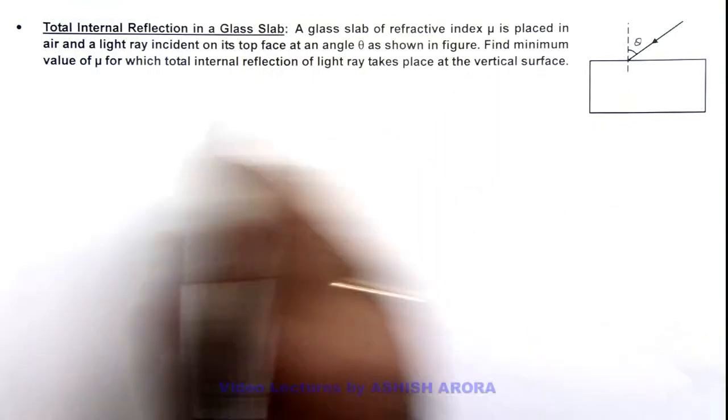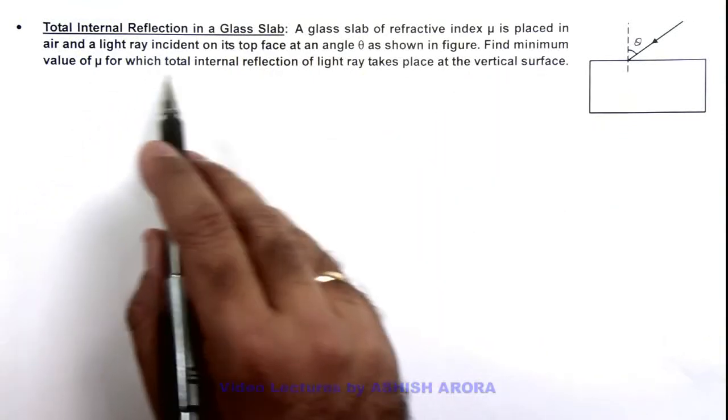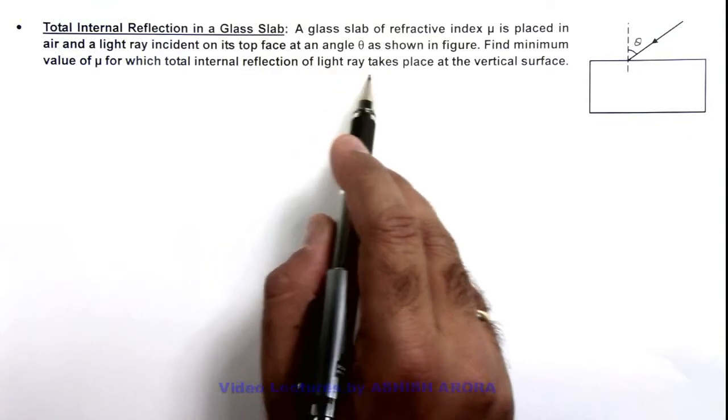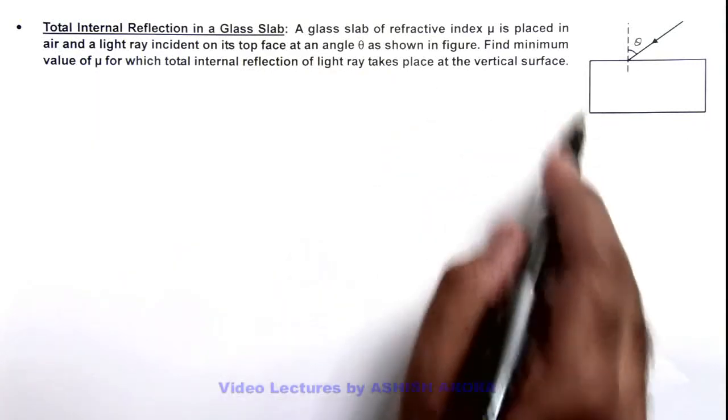We are required to find minimum value of mu for which total internal reflection of light ray takes place at the vertical face.